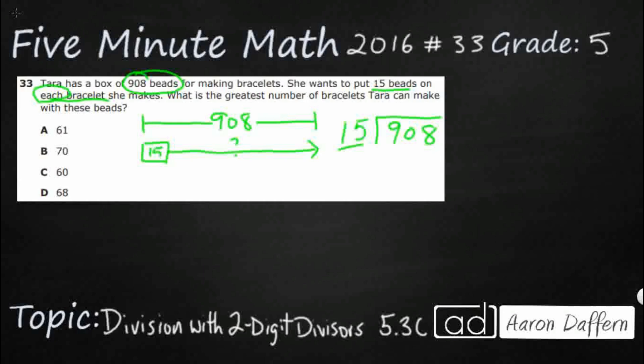So what I would suggest is, let's just take our 15s and let's just go ahead and get our multiples of 15. So 1 times 15 is going to be 15. So 2 times 15, let's see, we're going to double that. 15 and 15 is going to make 30. So 3 times 15, I'm going to add another 15, so that's going to be 45.